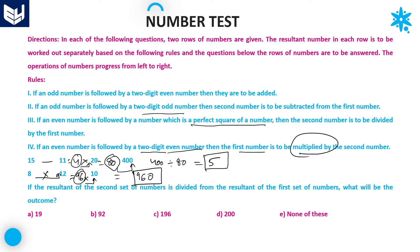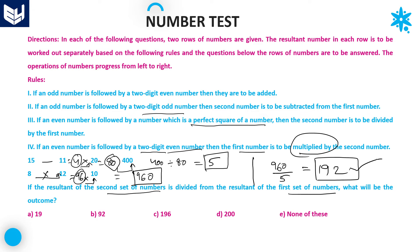Resultant of the first row is 5 and resultant of the second row is 960. The question asks: if the resultant of the second set of numbers is divided by the resultant of the first set of numbers — 960 divided by 5 — what is the outcome? 960 divided by 5 equals 192.